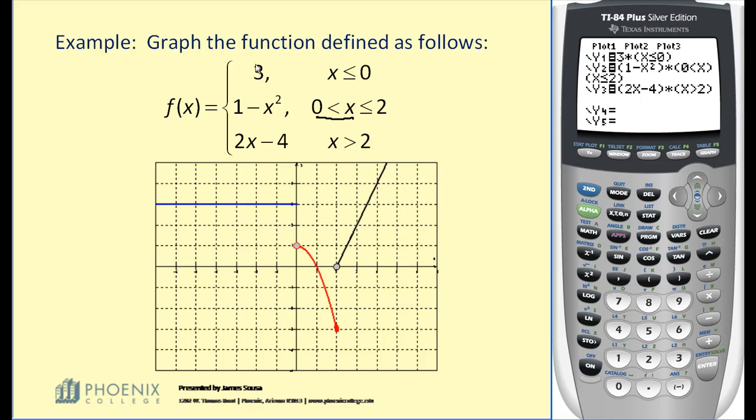For example, the first function was f of x equals 3, so I typed in the 3 and then I multiplied it by x is less than or equal to 0. Now the second piece of the function, 1 minus x squared, since I have a sum or difference of two terms, I do have to put that function rule in a set of parentheses. And I multiply it by, in this case, I have two intervals to multiply it by. You cannot type this in as a compound interval or compound inequality in the calculator, so I had to type in 0 less than x in parentheses and x greater than or equal to 2.